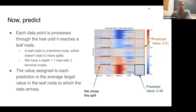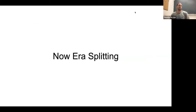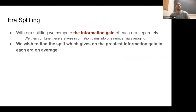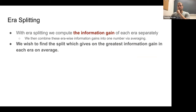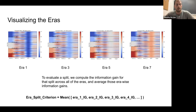Now, what is era splitting? This is where we attack the original algorithm. With era splitting, we compute the information gain of each era separately and then combine these era-wise information gains into one number via averaging. We want to find the split which gives the greatest information gain in each era on average. This is really the main idea that is different from the original algorithm.